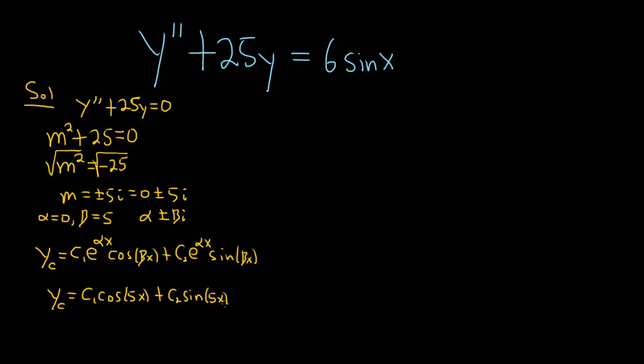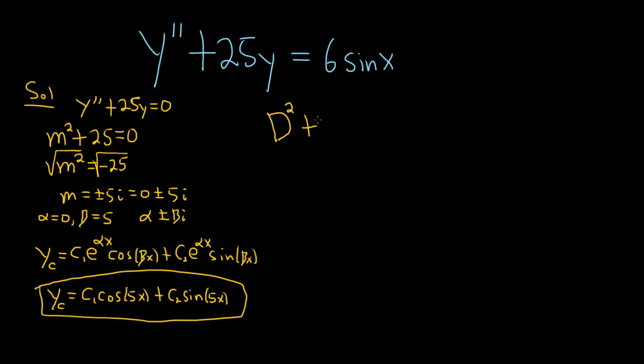I'm going to put this in a box because it's important — e to the zero x is one, so it's gone. The next step is to write this using differential operators. Because it's a second derivative I'm going to put D squared here, and for the 25y term just put 25, giving (D² + 25)y. And then on the right-hand side we have 6 sine x.